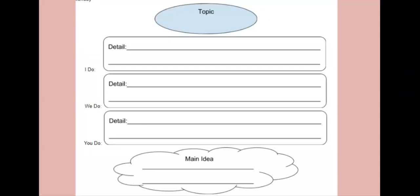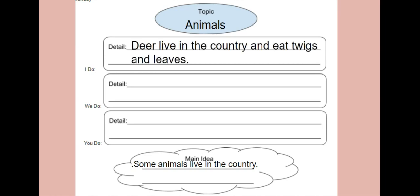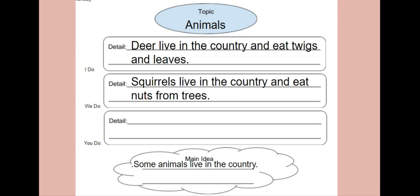Now we are going to take a second to organize our thoughts into a graphic organizer. You may get a sheet of paper and draw your own version — just make sure you have a section for the topic, three supporting details, and the main idea. The topic of today's text was animals. The main idea was that some animals live in the country. The first detail was about deer: deer live in the country and eat twigs and leaves. The second detail was that squirrels live in the country and eat nuts from trees.